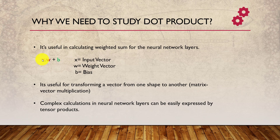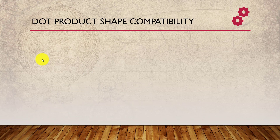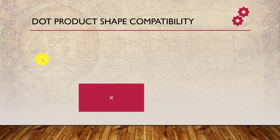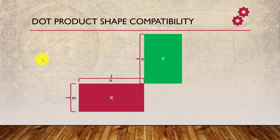Let's try to understand the shape-wise compatibility needed for the dot product. Let's say I have a matrix — a 2D tensor — with m rows and n columns. I have another matrix with n rows and p columns. We can take the dot product of these two matrices because the number of columns in x equals the number of rows in y — both need to match for the dot product to be defined. The resultant tensor size will be determined accordingly.